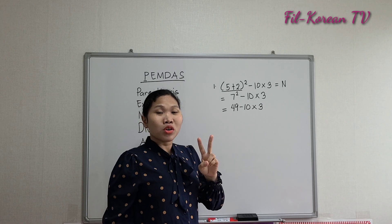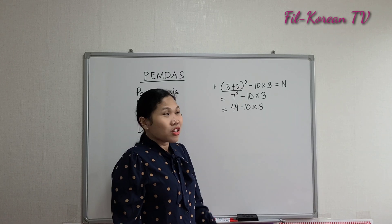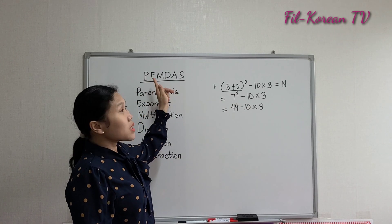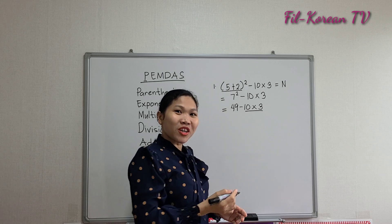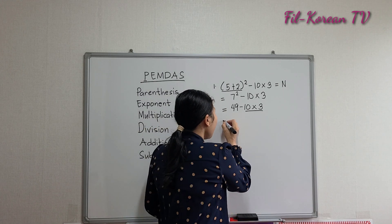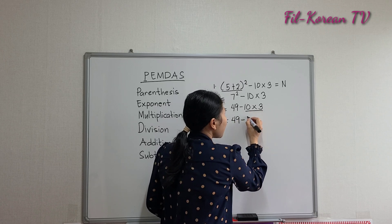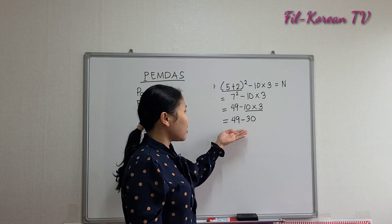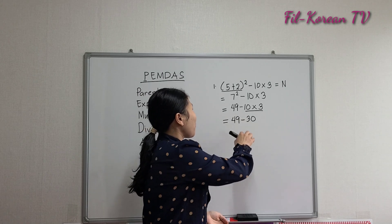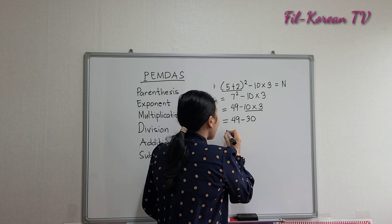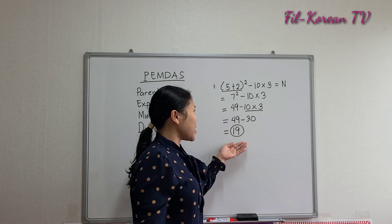Next, there are two operations left: subtraction and multiplication. According to the rule — parenthesis, exponent, multiplication — we will multiply first before subtracting. 10 times 3 equals 30. Now we will do the subtraction last. 49 minus 30 equals 19. The answer is 19.